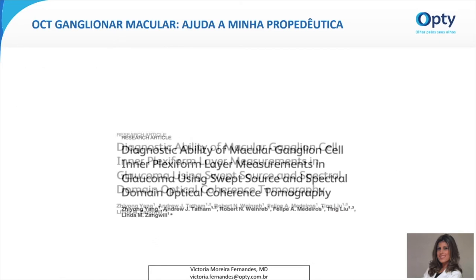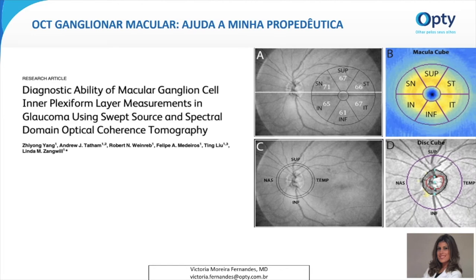Já nesse segundo artigo, publicado pelo grupo do Felipe Medeiros em 2015, apesar de admitir que o padrão de afinamento da camada de fibras nervosas é um marcador importante para o diagnóstico de glaucoma, ele mostra um reconhecimento da capacidade auxiliar da medida da camada de células ganglionares macular. Nesse artigo, se utilizou tanto a tecnologia do Spectral Domain quanto do Swept Source. Compararam as espessuras da camada de fibras nervosas com as espessuras das camadas de células ganglionares e plexiforme interna, mostrando uma capacidade de detectar glaucoma similar. Também se mostrou que a medida do complexo de células ganglionares e camada plexiforme interna tem uma menor variabilidade, e que um corte de wide-angle scan oferecia uma detecção similar a um corte separado do macular cube scan com o disc cube scan.